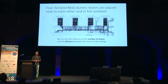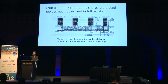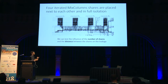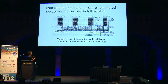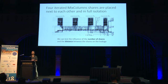We route four of these iterated mixed column instances completely separated — both in placement and routing — on the floor plan of our FPGA. This allows us to vary the order of the masking scheme: first order using the first two shares, second order using the first three, or third order using all four shares. We can also vary the distance, comparing shares placed closer together versus further apart.